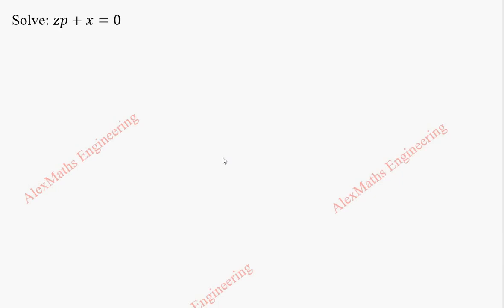Hi students, this is Alex. In this video we are going to solve the given partial differential equation. This is of the form capital P into small p plus capital Q into small q equal to R. We're going to rewrite this to match with this form. So we have zp, so z into small p, and we don't have a q term so this will